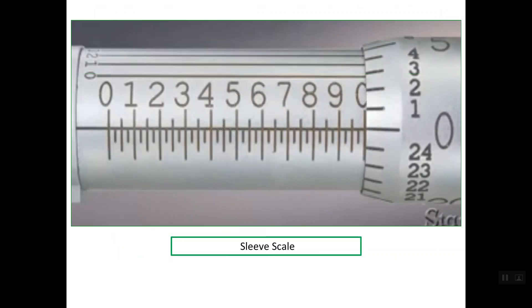Let's start with the sleeve scale. As you see here, the micrometer is completely open, so the full range is shown. The sleeve scale starts with 0 up to the last line, which is 1 inch. This 1 inch is divided equally into 10 partitions, so the value of each partition is simply 1 tenth of an inch.